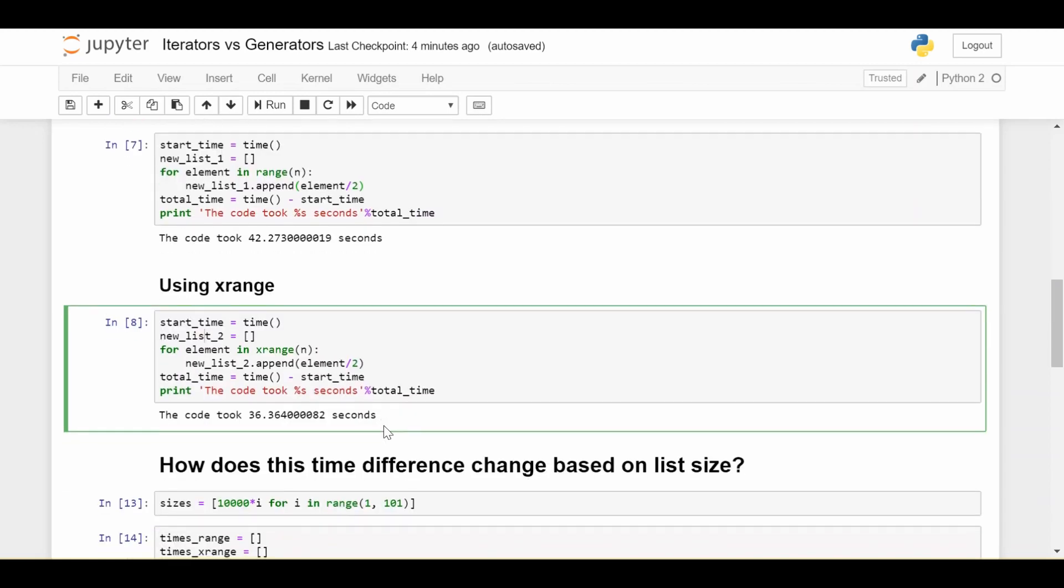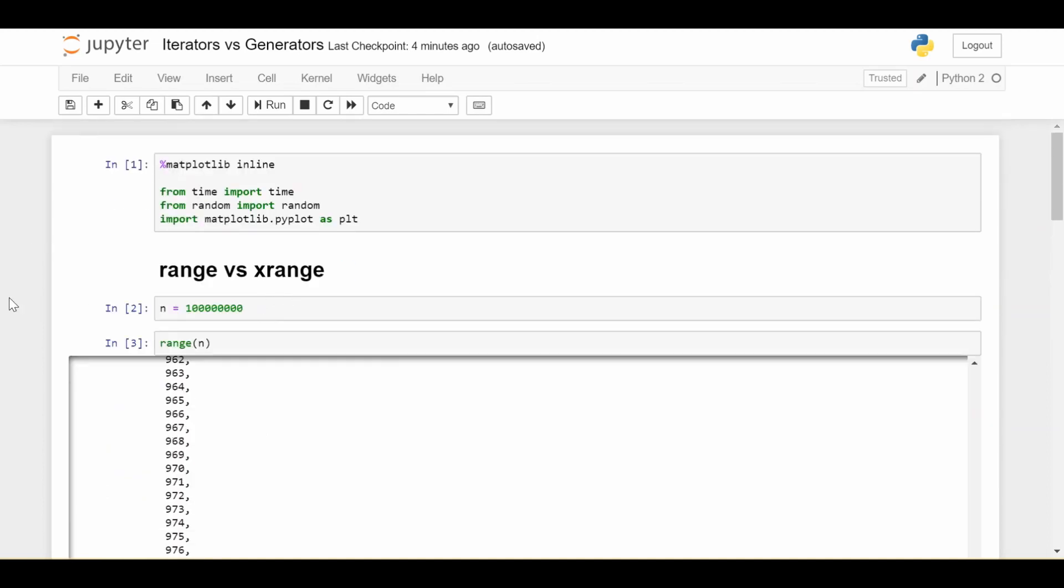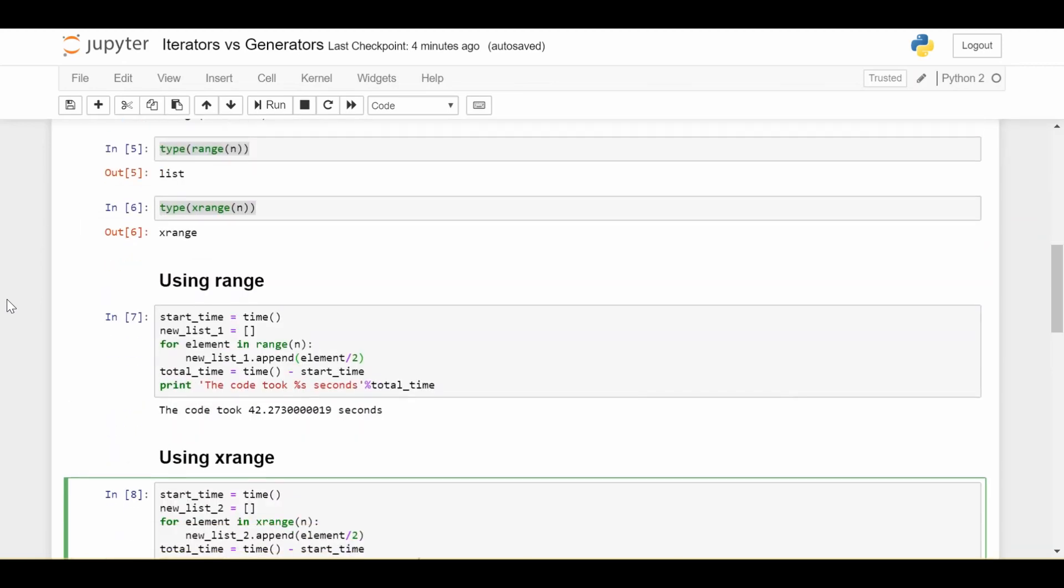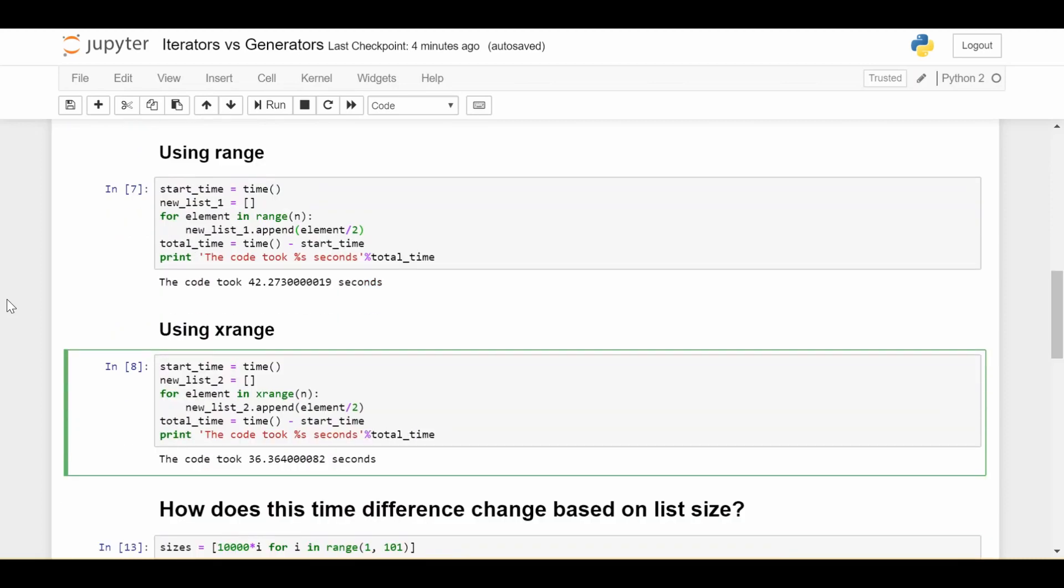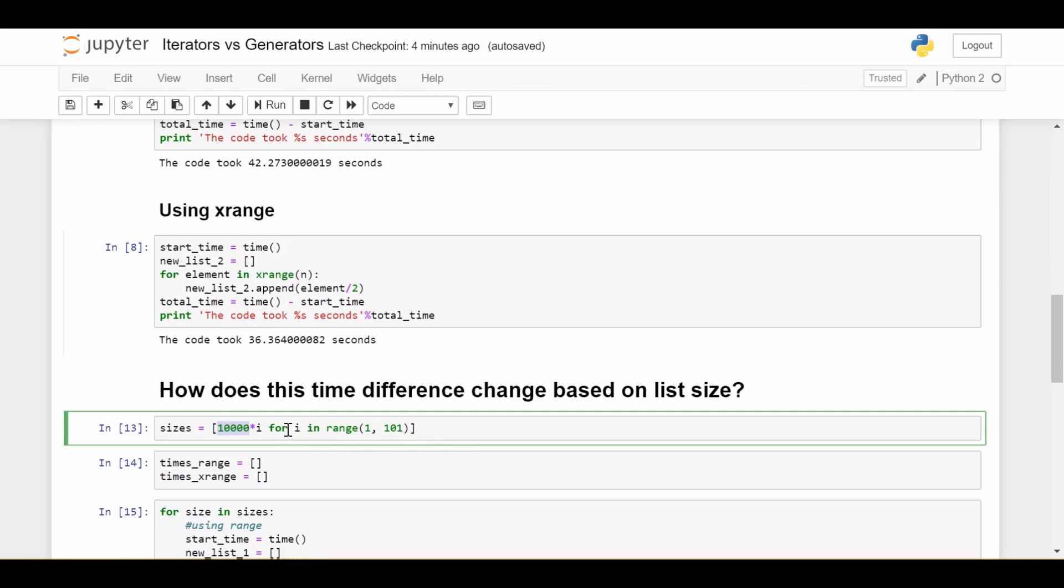So before we close out this video, let's look at how does this time difference change based on the size of the list? Here, of course, we used a very massive list of size 100 million, but the real question is as your list gets bigger and bigger starting from very small values to bigger values, how does the performance of using range versus xrange change? So to do that, we're going to be testing a bunch of different sizes starting at 10,000 and ending at 1 million. So and every size is going to be 10,000 more than the size before it. So we'll test 10,000, 20,000, 30,000, all the way to 1 million. So sizes is a rather large list.